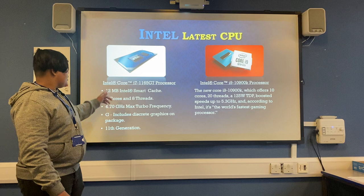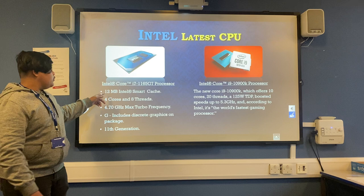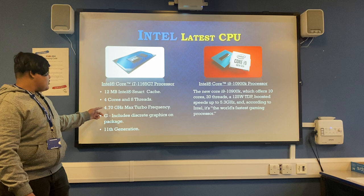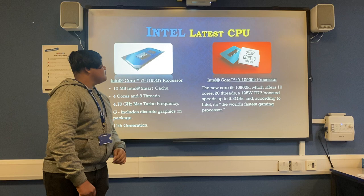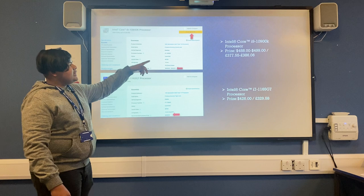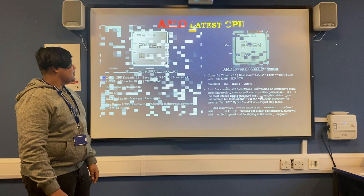The second latest Intel CPU is the Intel Core i7-1167G7 processor. It gives you 12 MB Intel Smart Cache, 4 cores, 8 threads, and a 4.20 GHz max turbo frequency. The G suffix includes great graphics on package and it is available on the 11th generation. The Intel Core i9 is priced at around £386 and the Intel Core i7 is around £329.